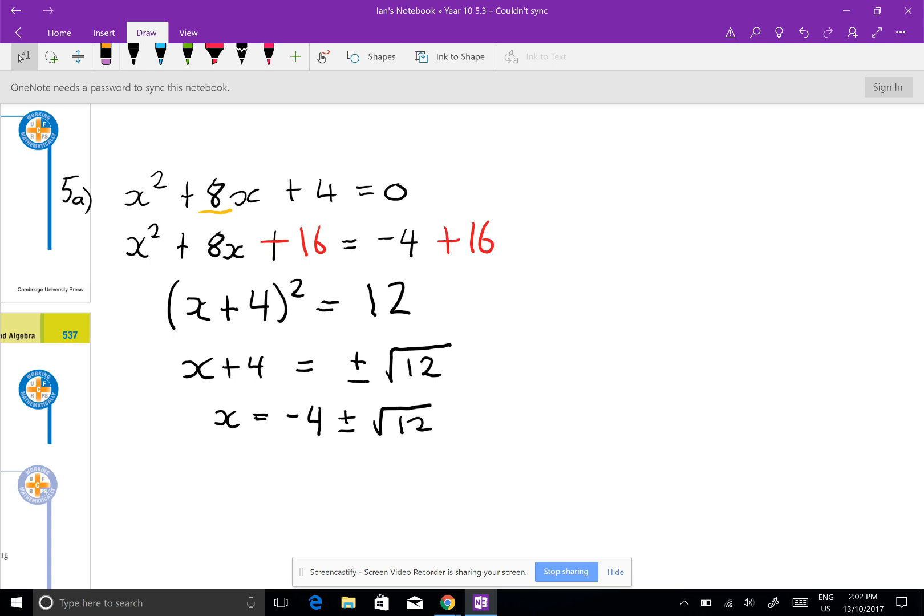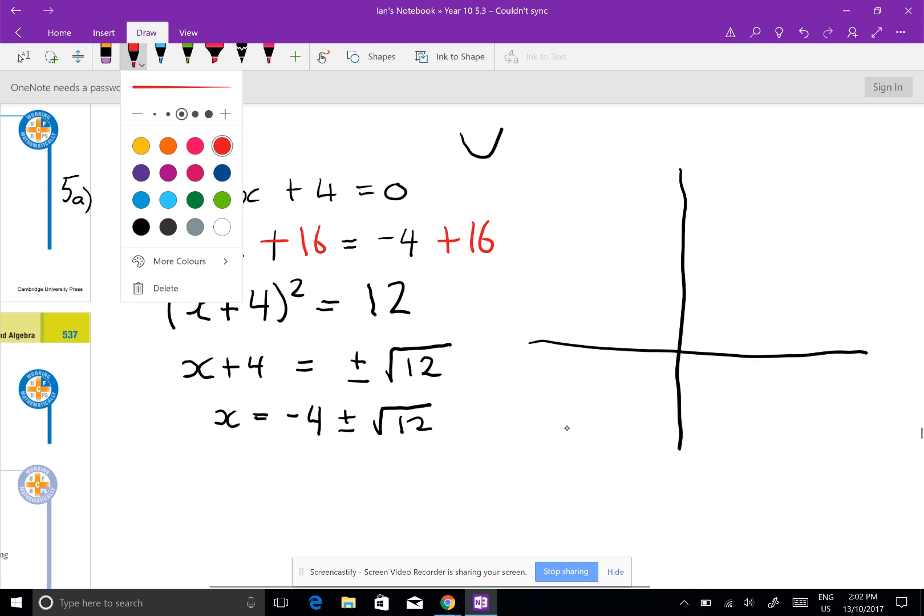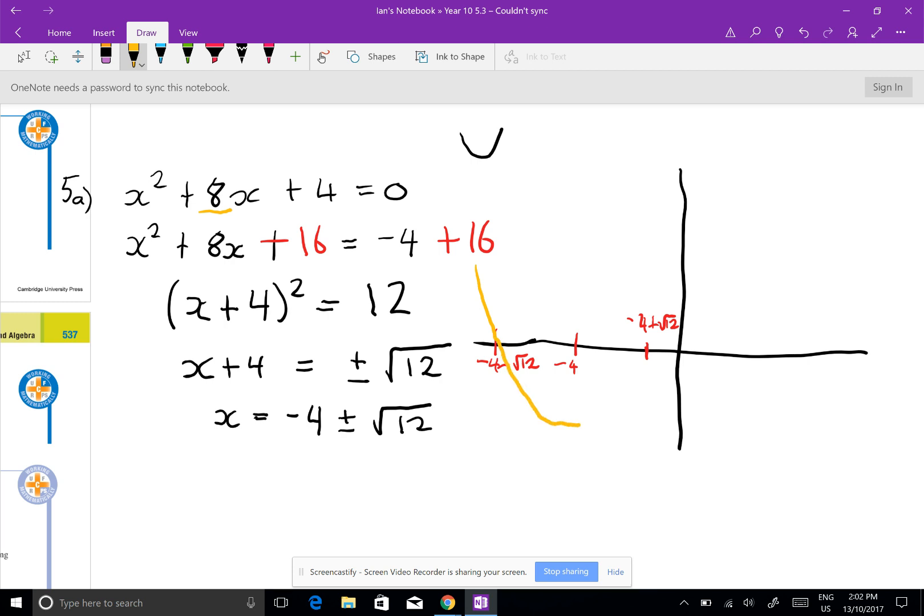Now what does that tell us? That tells us that this is a positive parabola. It's positive because it's a positive x squared, so it's concave up. And its roots are at minus 4. So I'll put them at minus 4. Well, one root is minus 4 plus root 12. There you go, minus 4 plus root 12. And there's another one over here which is at minus 4 minus root 12. And I can sketch it. And if I was really smart I'd say that that equals 4.